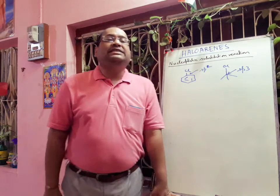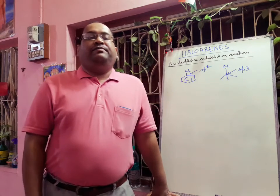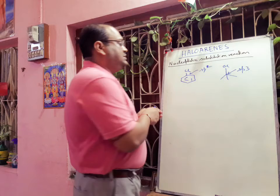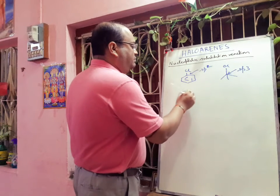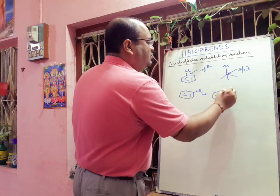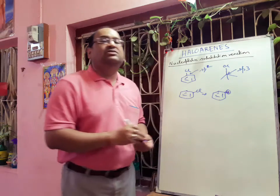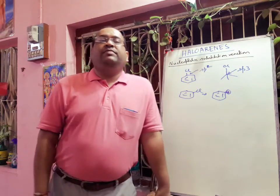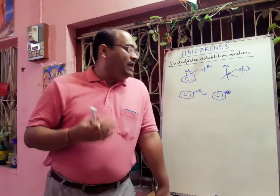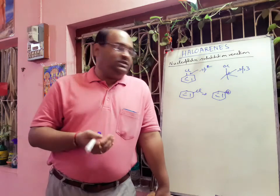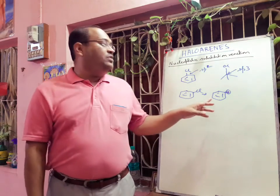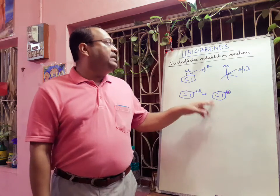The next point is the instability of the phenyl cation. If we think about the SN1 reaction of haloarenes — for example, chlorobenzene forming a phenyl cation — this cation is not stabilized by the pi bonds because the cation and the pi bonds are in perpendicular positions, so there is no delocalization of electrons. That is why SN1 does not occur for haloarenes.